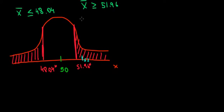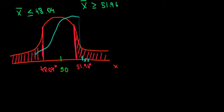And if we draw a normal distribution around that value, a normal distribution around 52 would look probably something like that. So let's assume this is a normal distribution around the value of 52.